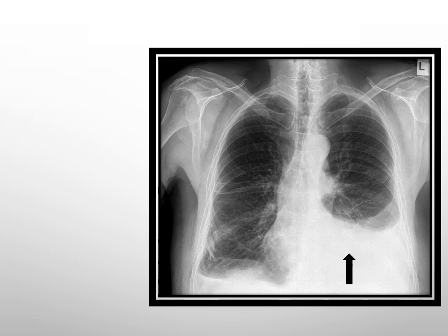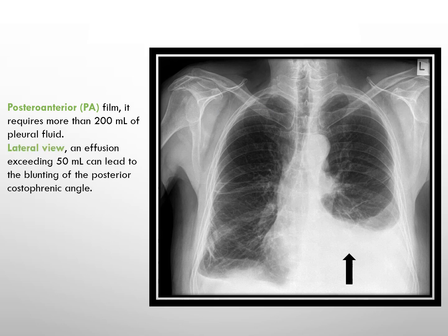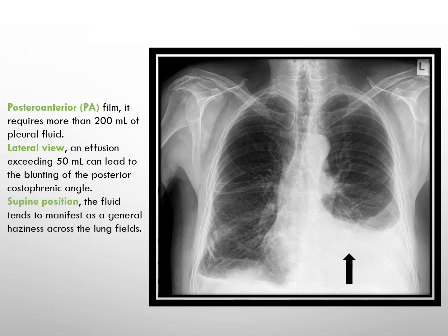The presence of dense opacification in the lung fields with a concave meniscus is a characteristic sign of pleural effusion. To visualize this on posterior-anterior view, it typically requires more than 200 ml of pleural fluid. On lateral view, an effusion exceeding 50 ml can lead to blunting of the posterior costophrenic angle. In a supine position, the fluid tends to manifest as a general haziness across the lung fields. This x-ray shows pleural effusion visible on the posterior-anterior view.